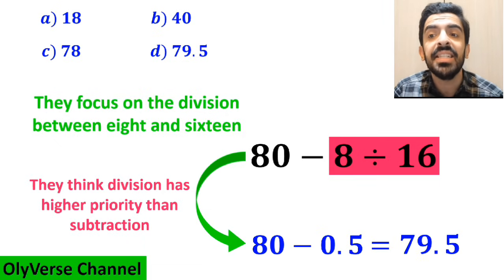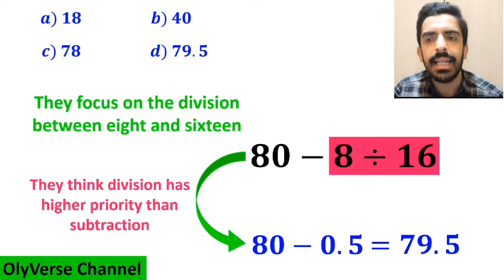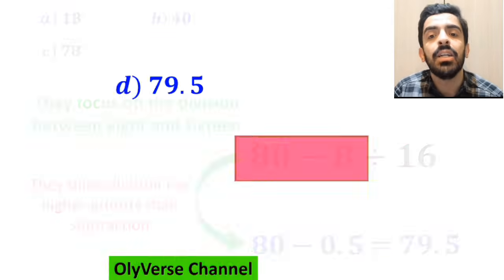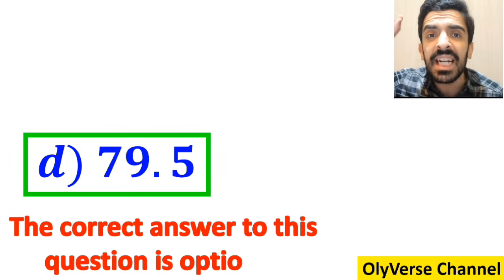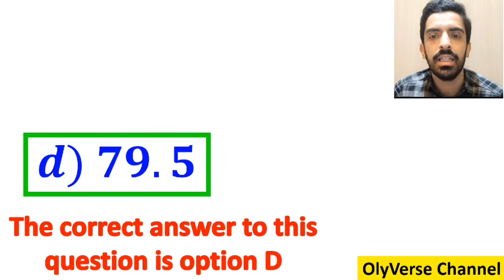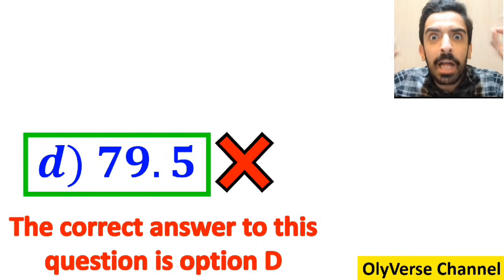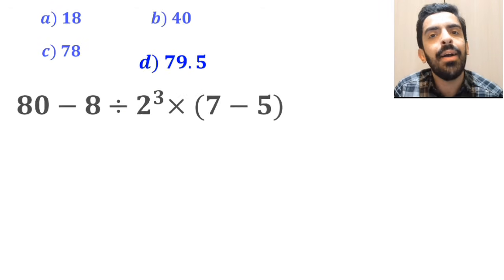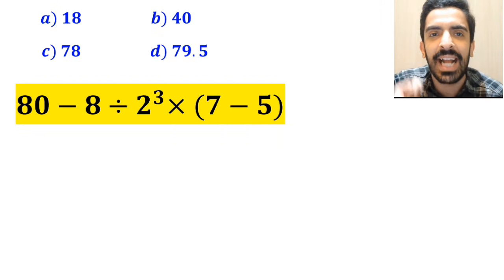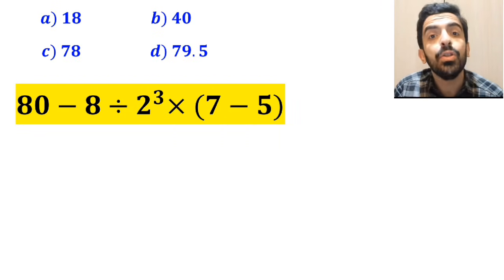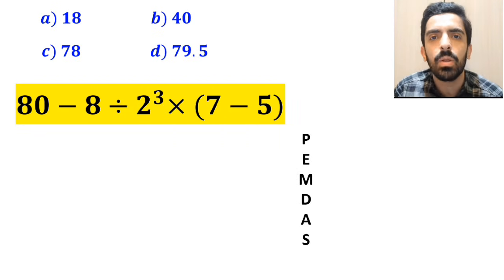This gives them the answer 79.5, and immediately they conclude that the correct answer is option D. However, this answer is absolutely wrong. Now let me show you how to solve this expression correctly. To solve this problem, we must follow the PEMDAS rule.